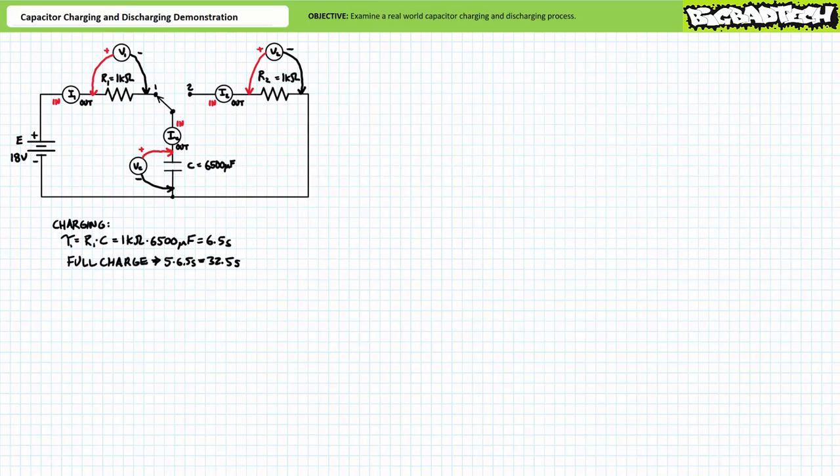This is a super large time constant for two important reasons: one, R1 presents a fairly large resistance value at one kilohm; and two, most importantly, the capacitor is astronomically huge — 6500 microfarads. That's like a super tanker for charge storage compared to the little capacitors you might be used to in lab. A complete charge will occur after a time span of five time constants, or five times 6.5 seconds, or 32.5 seconds.